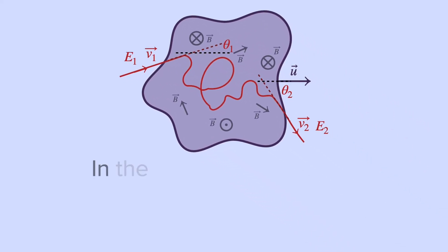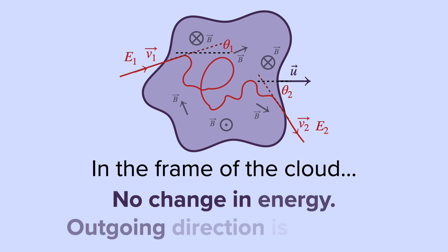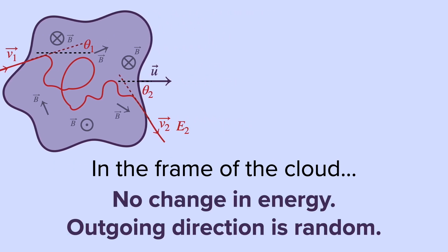In the frame of the cloud, there's no change in energy and the outgoing direction is random.